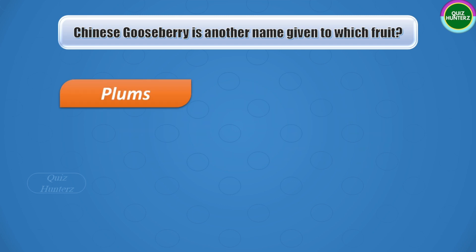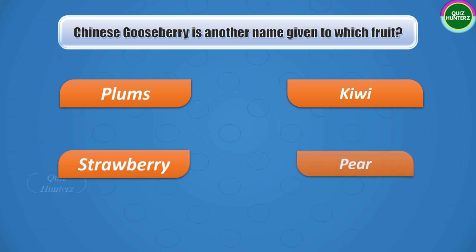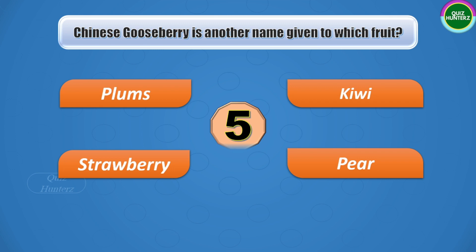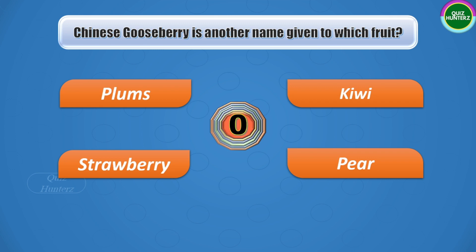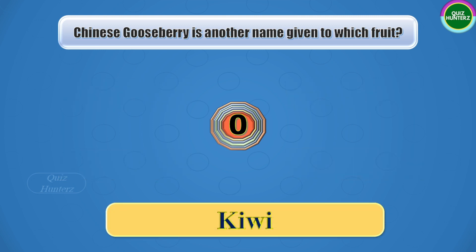Next question: Chinese gooseberry is another name given to which fruit? Your options are plums, kiwi, strawberry, or pear. Your time starts now. And the correct answer is kiwi.